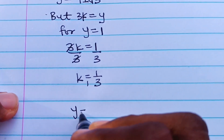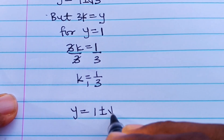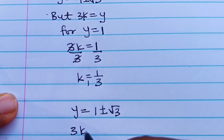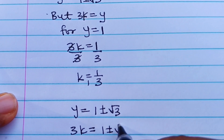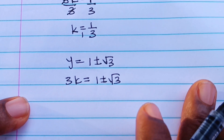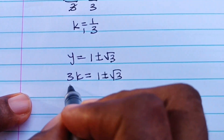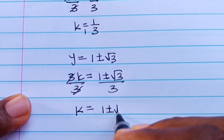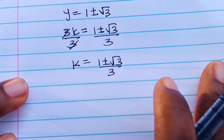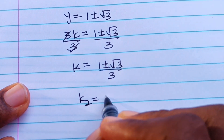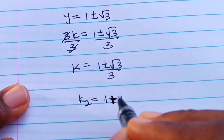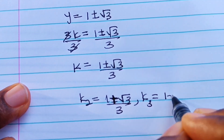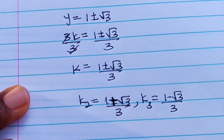For the other values, y equals 1 ± √3, so 3k equals 1 ± √3. Dividing both sides by 3, k equals (1 ± √3) / 3. Therefore the second value is k = (1 + √3) / 3 and the third value is k = (1 − √3) / 3. Thanks so much for watching. Bye!